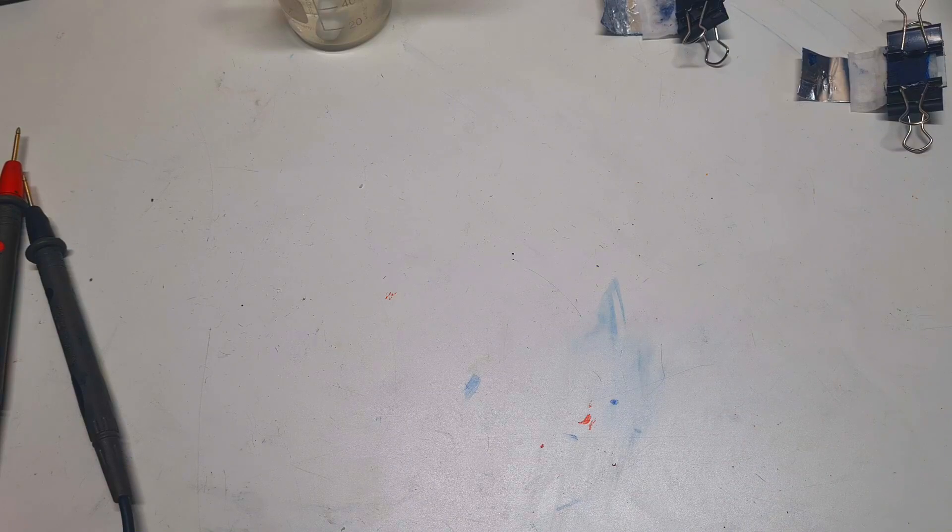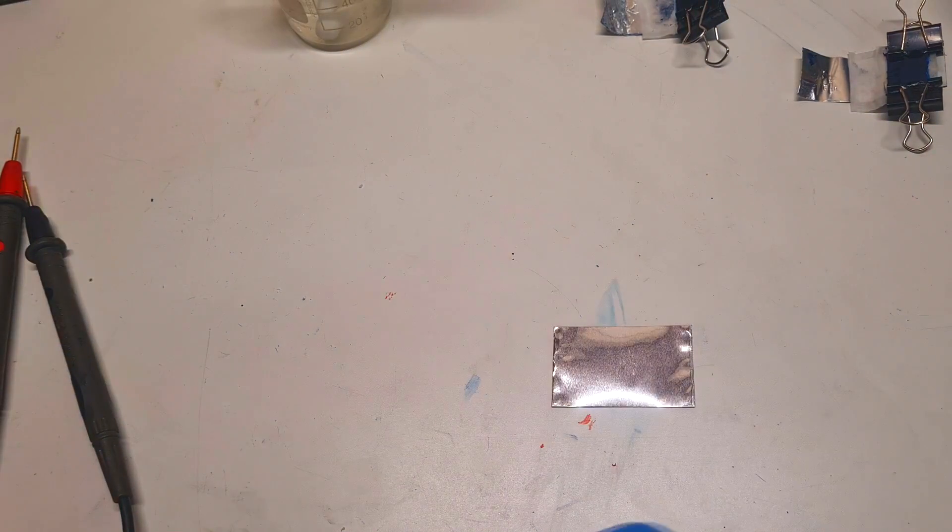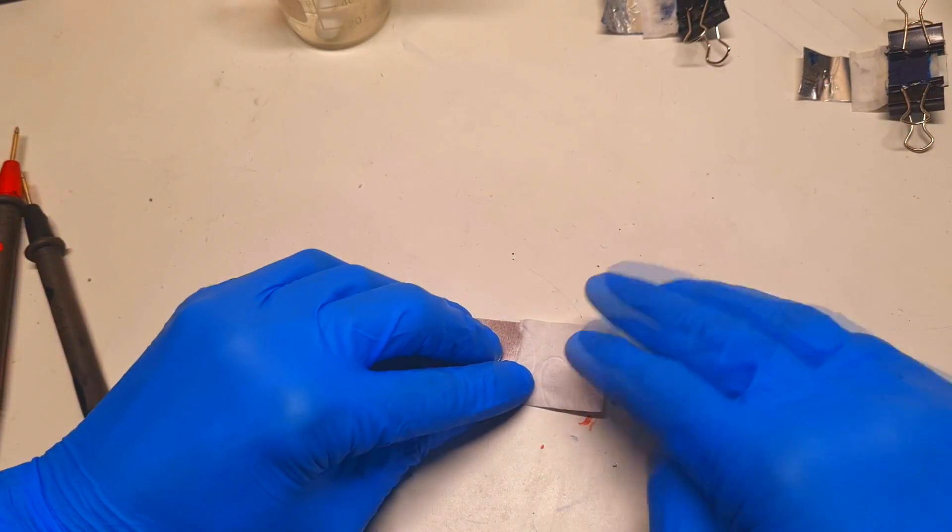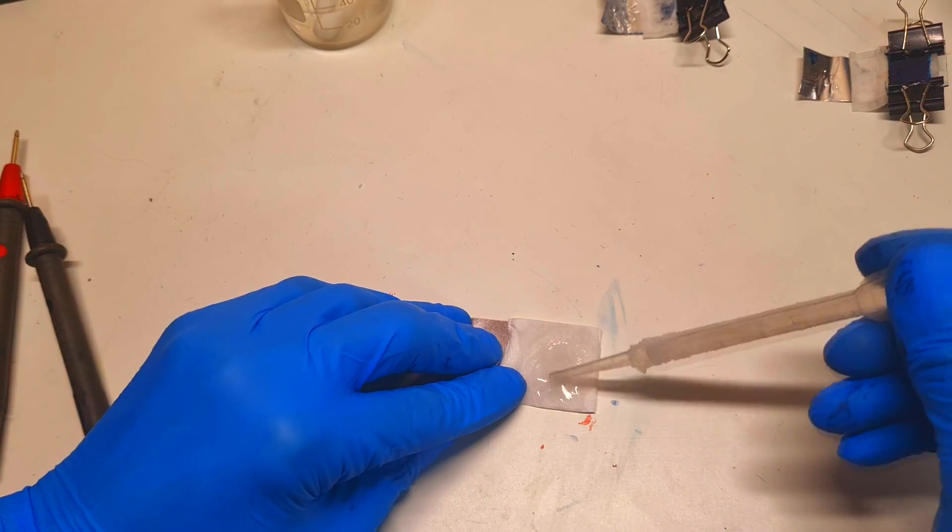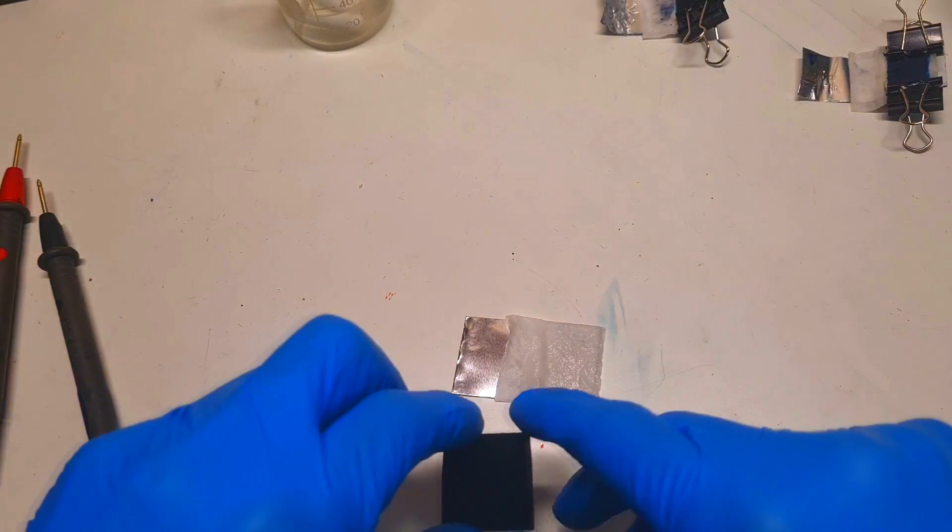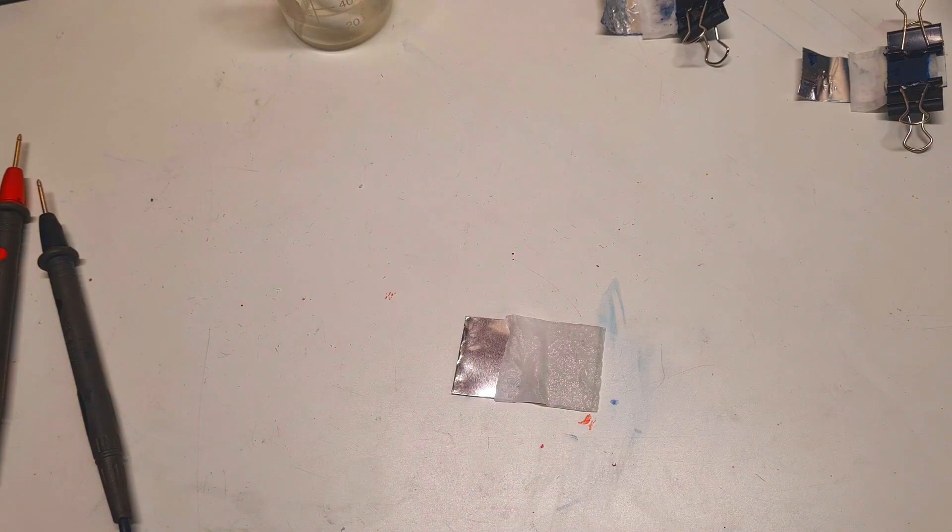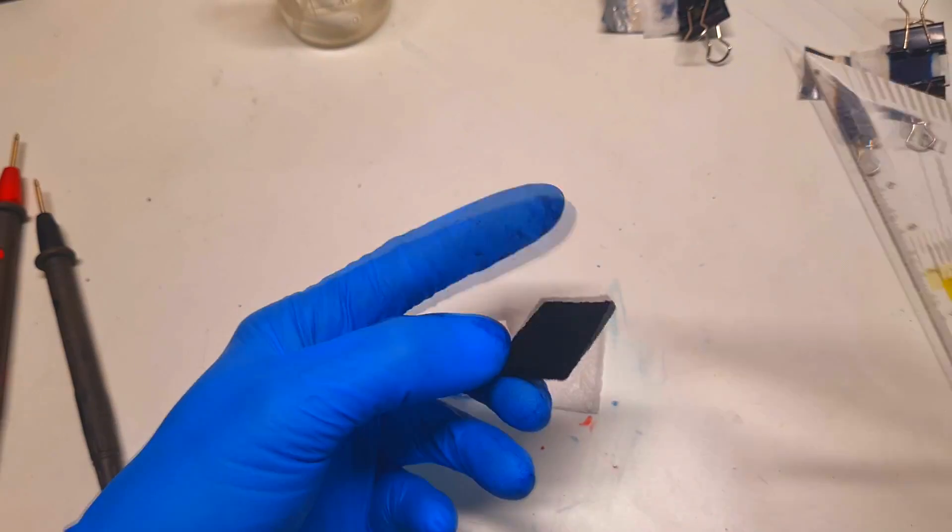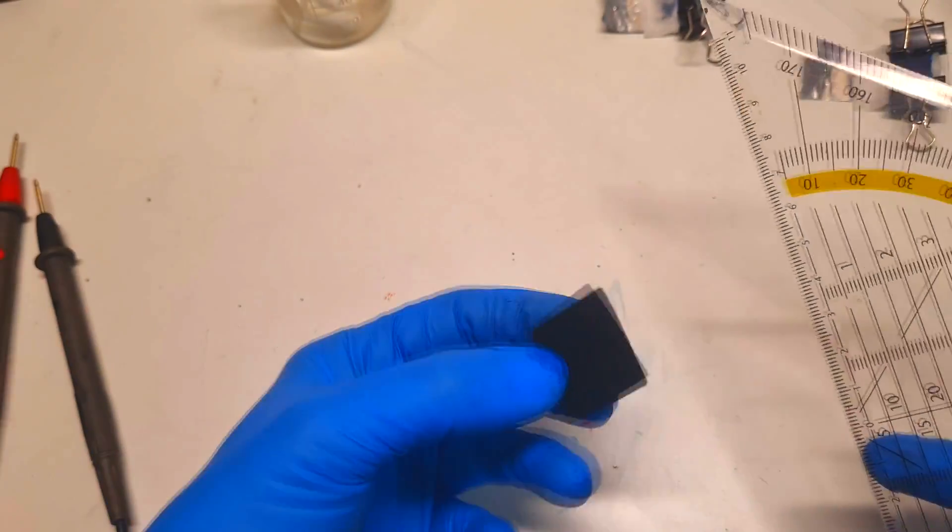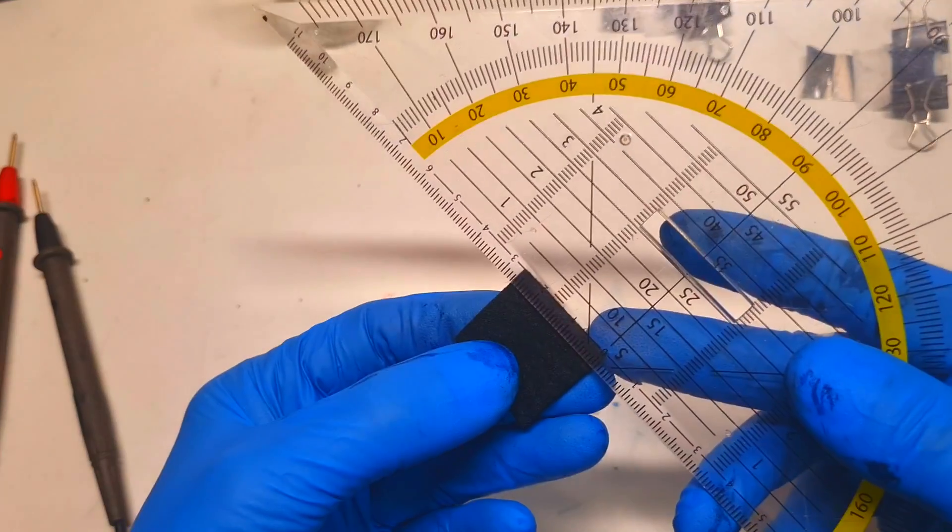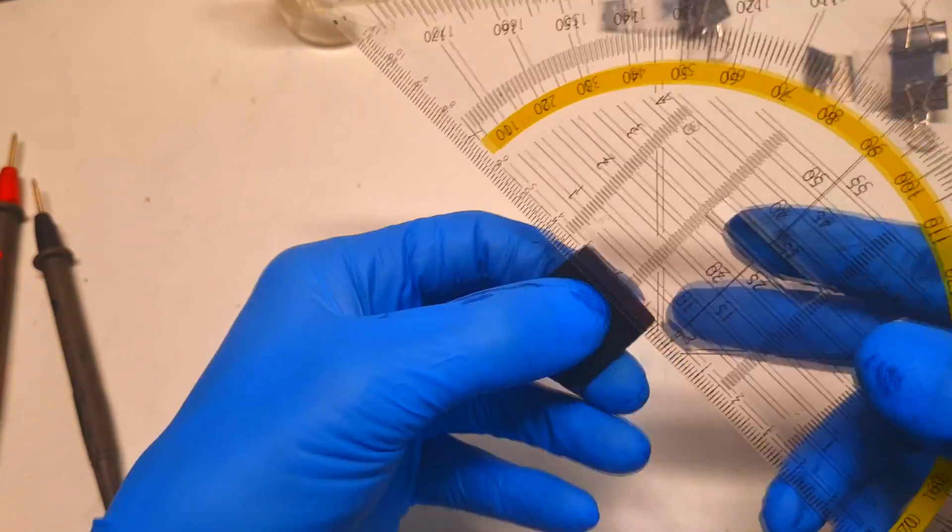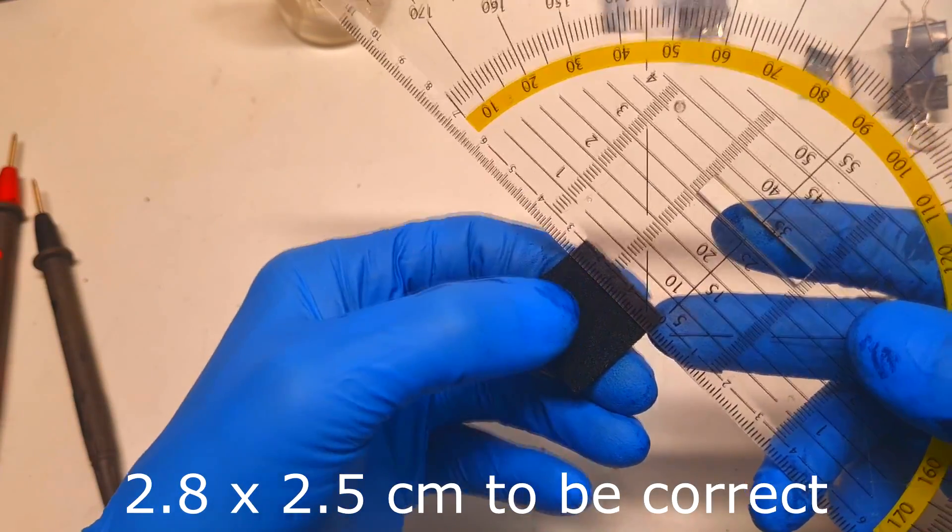And now just for fun, I will make a little bit larger cell. My aluminum, separator, and here I have a little bit larger carbon felt which is impregnated with Prussian blue. And yeah, the size of this one is two and a half centimeter by two and a half centimeter.